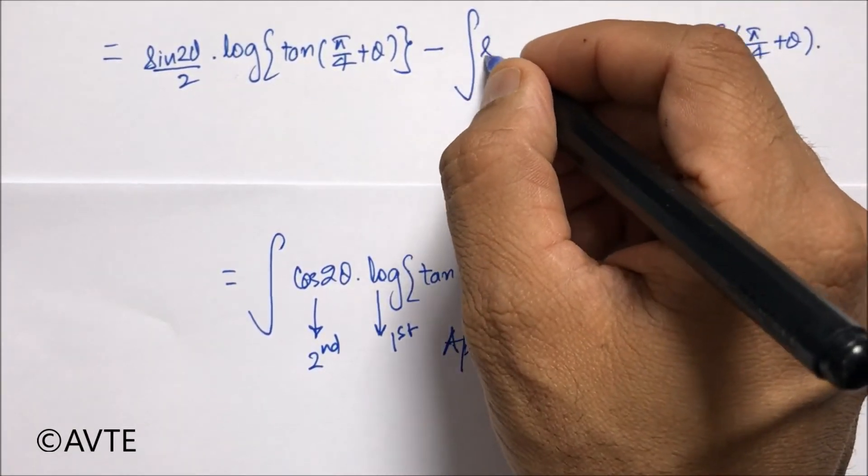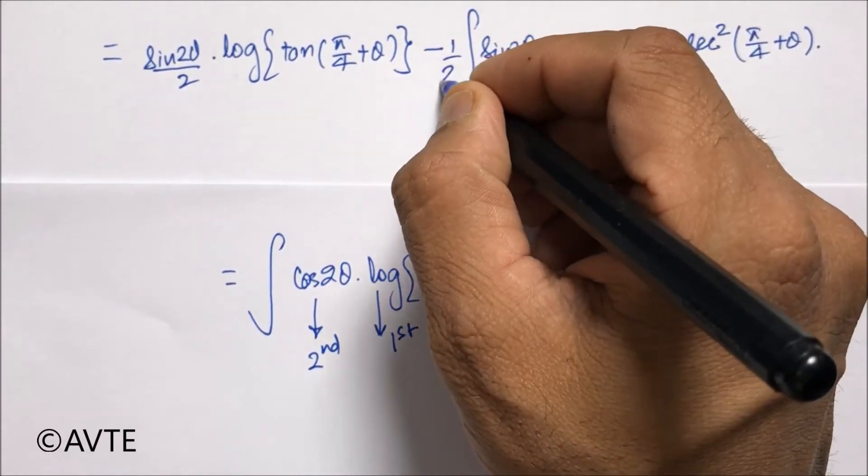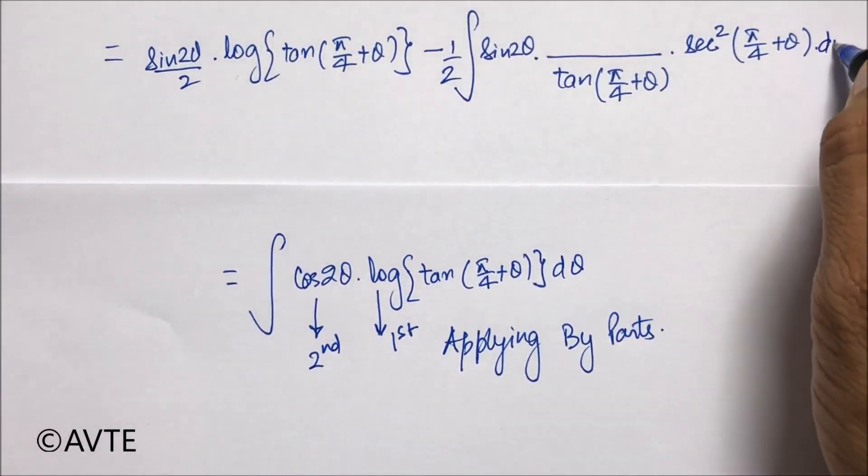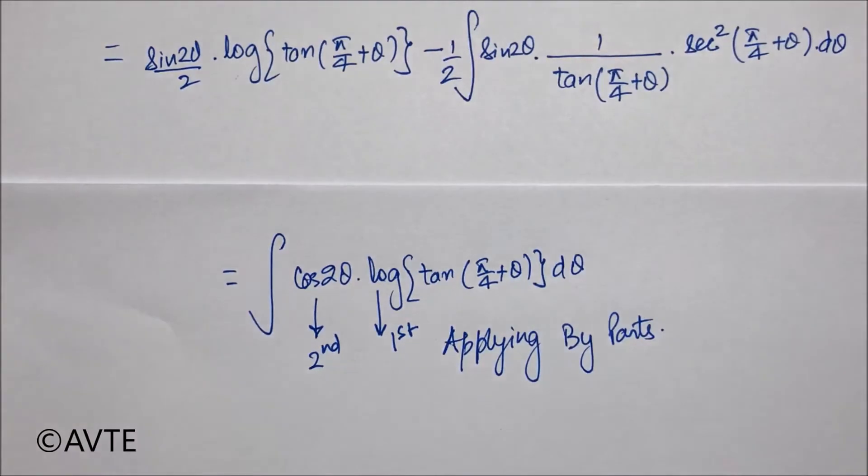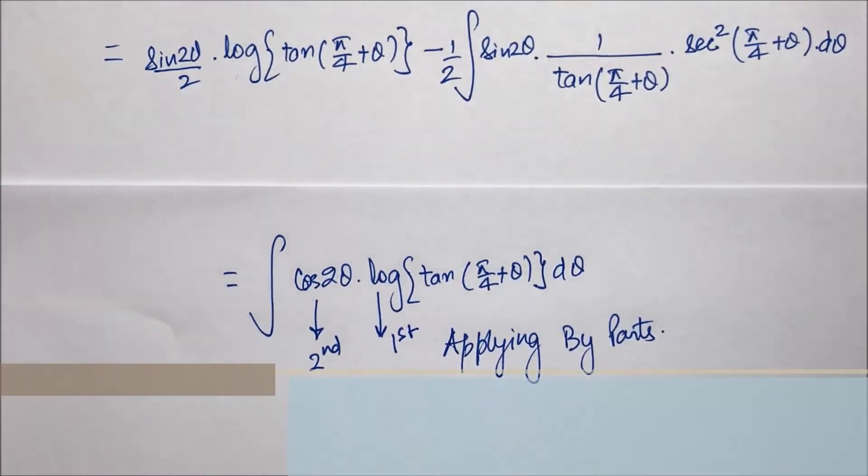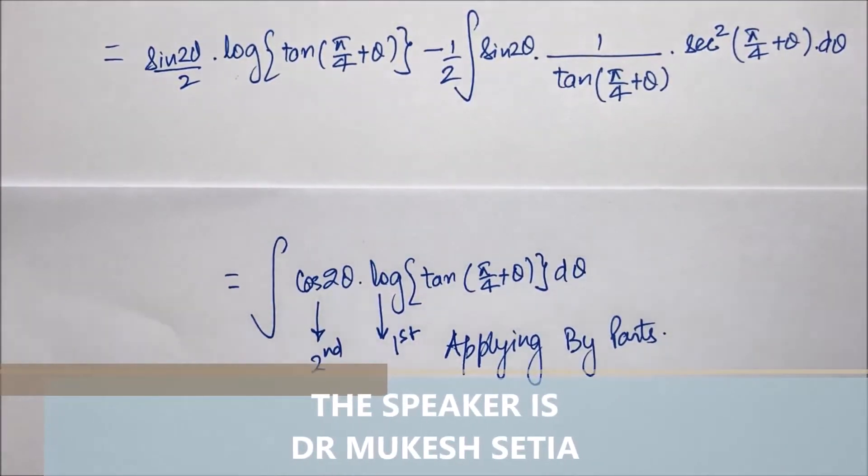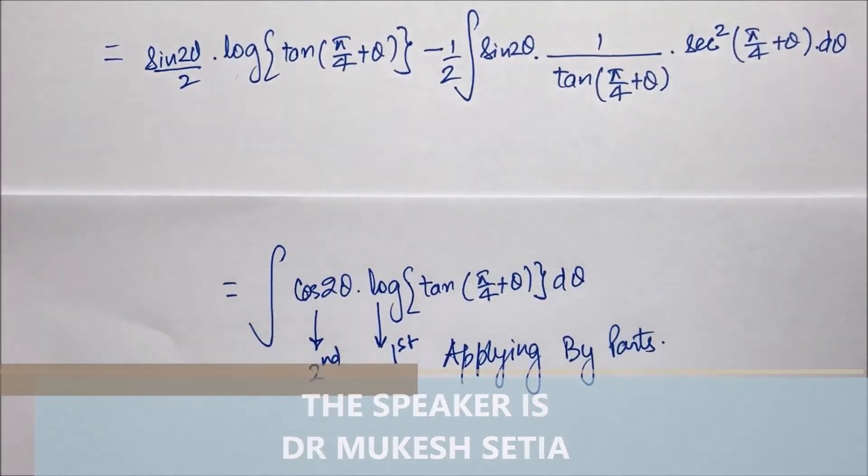The integration of cos 2θ is sin 2θ, and I am taking the constant outside upon 2, and the derivative is dθ. Now everyone can do up to this step, but now what to do next is a problem.